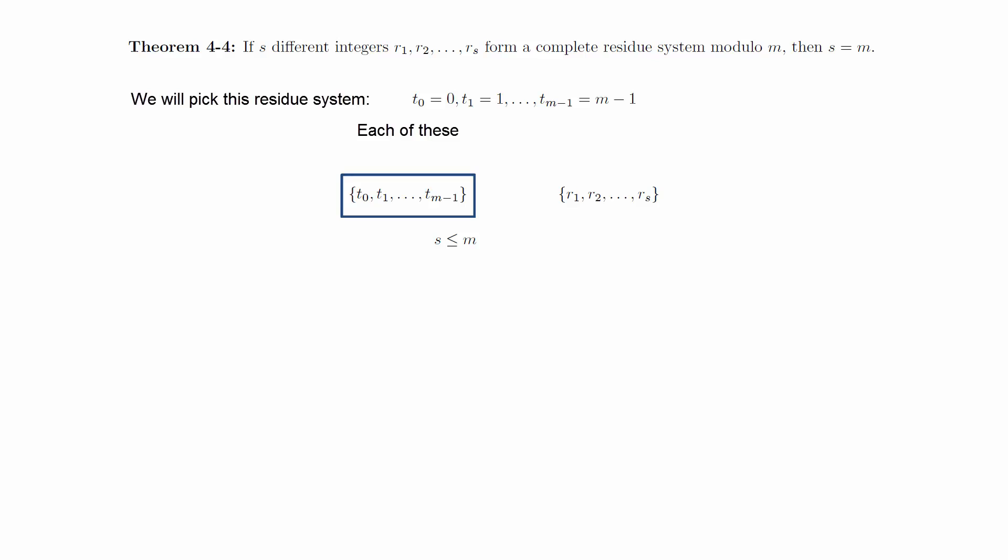Conversely, we know that each t sub i is congruent to exactly one of the r sub i, since the r sub i form a complete residue system, which shows that m is less than or equal to s. Putting these two statements together, we see that s equals m.